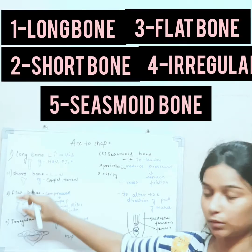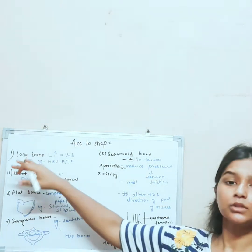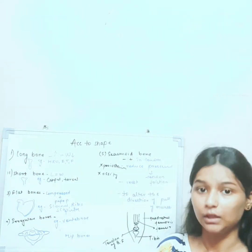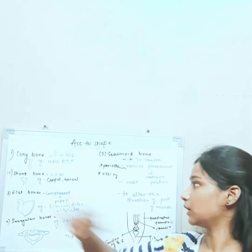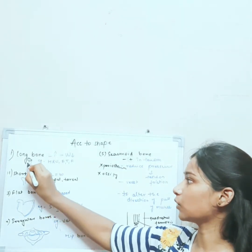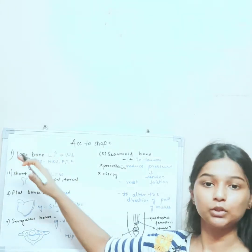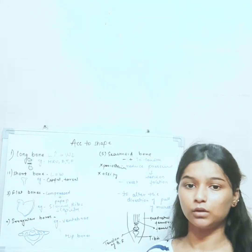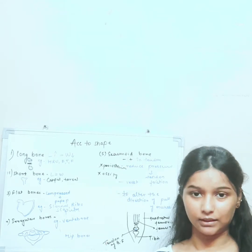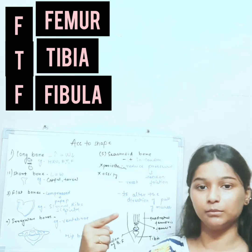The five subcategories are: long bone, short bone, flat bone, irregular bone, and sesamoid bone. Long bones are those bones that have more length in comparison with their width. They have two epiphyseal ends with one long shaft called the diaphysis. Examples of long bones are humerus, radius, ulna, tibia, femur, and fibula.